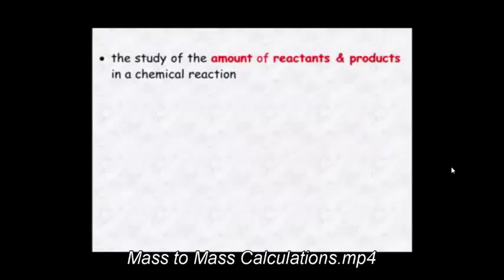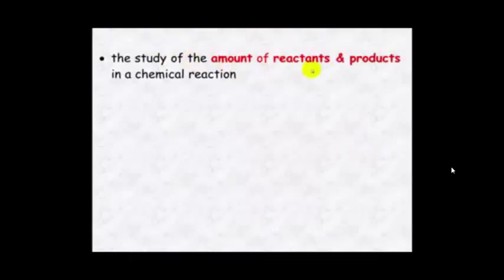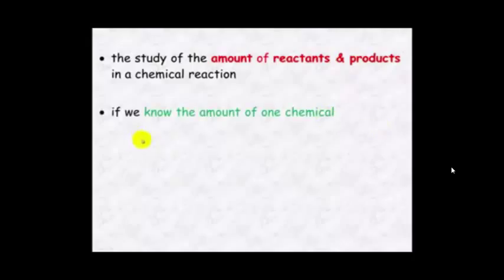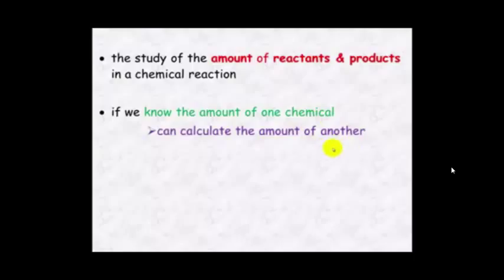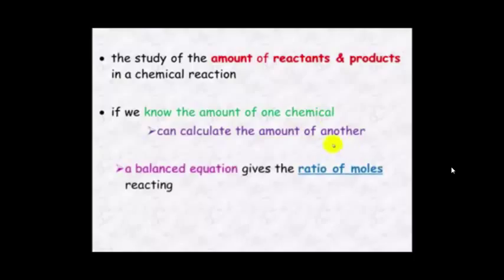Stoichiometry is the study of the amount of reactants and products in a chemical reaction. Basically if we know the amount of one chemical we can calculate the amount of another, using a balanced chemical equation which gives us the ratio of moles which are reacting.